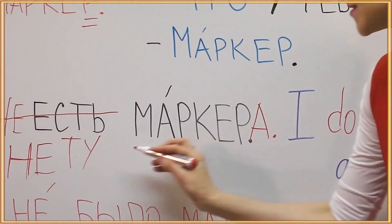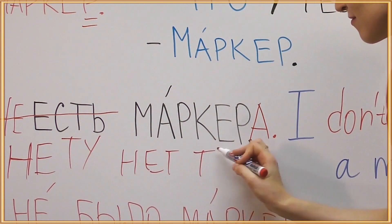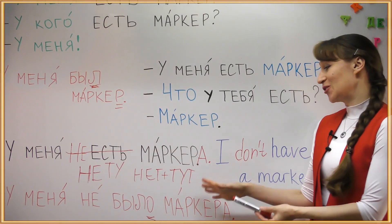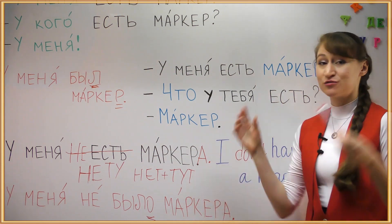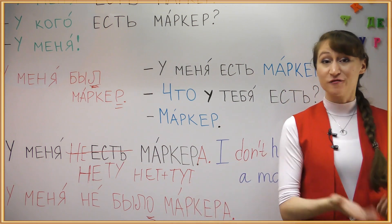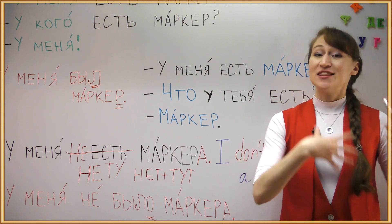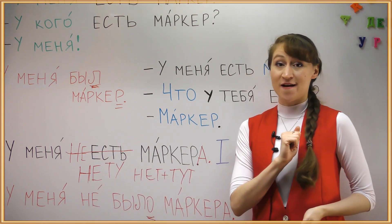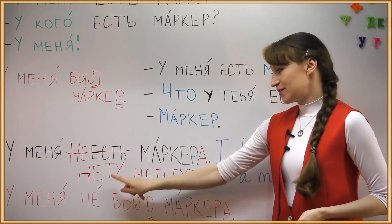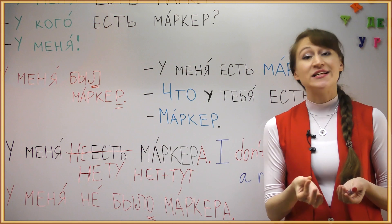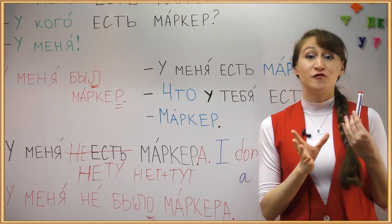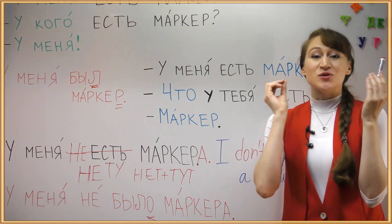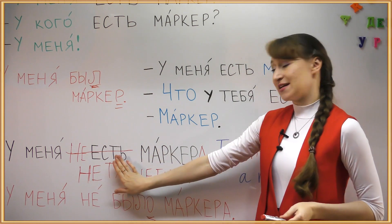Where does NETU come from? It comes from TUT. TUT is a colloquial word for ЗДЕСЬ — both mean 'here,' but TUT is more informal. In the process of language development, НЕТ and ТУТ got glued together and we now have НЕТУ. So НЕТ or НЕТУ denotes non-existence or absence. This НЕТ meaning 'no/non-existence' is actually different in meaning from the word for NO when we simply respond 'no' — I don't have a marker.